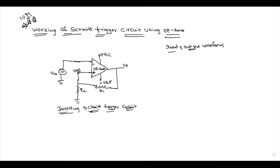We will clearly observe the input waveforms and output waveforms. We apply an input signal from a voltage generator to the operational amplifier. The final output will be in the form of a square wave, which we will check by drawing the input and output waveforms.